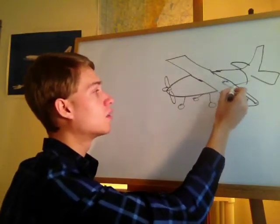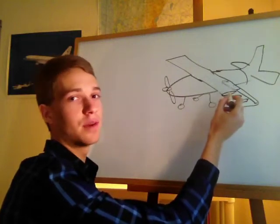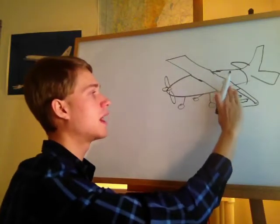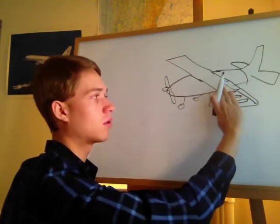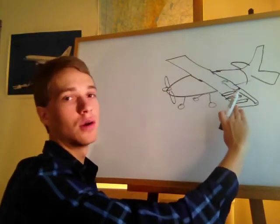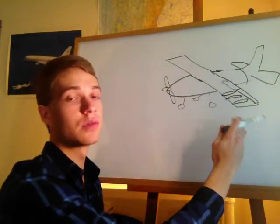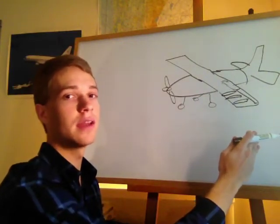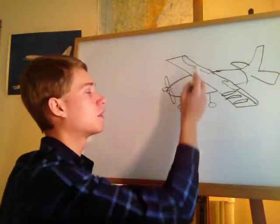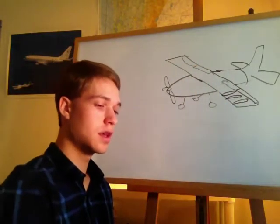Inboard, you have another hinged surface called the flap. It can either be flush with the wing or deflected downwards. The flap is used to increase lift on the wing, and that's used during takeoffs and landings. You've got one on each wing — that's how you're able to control it.